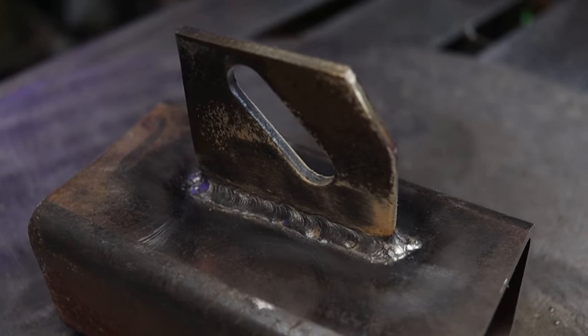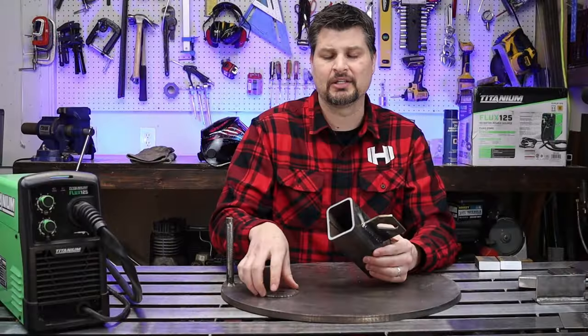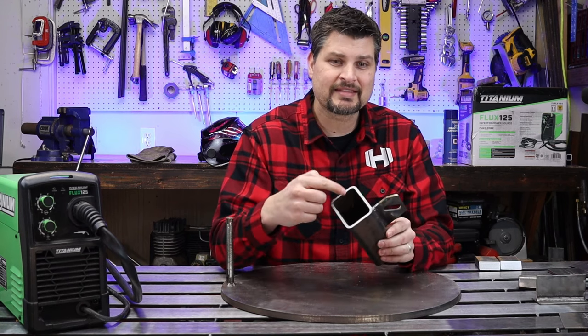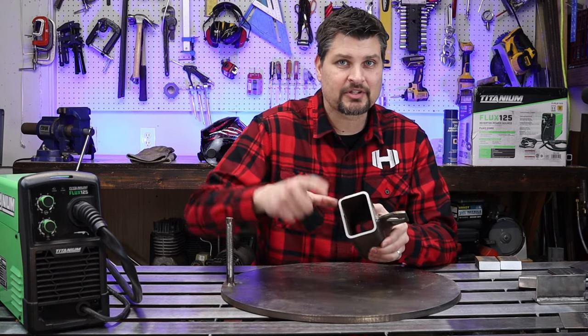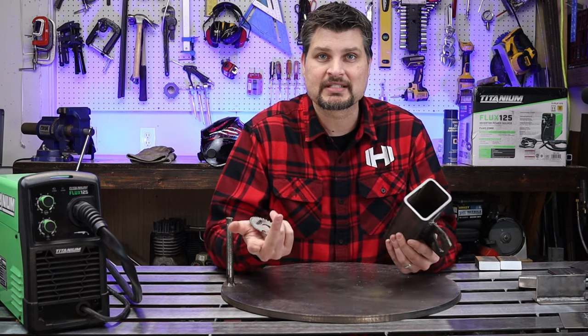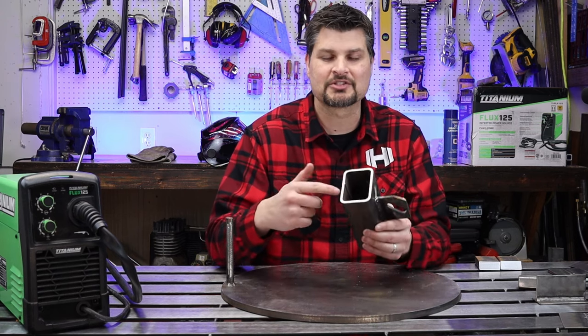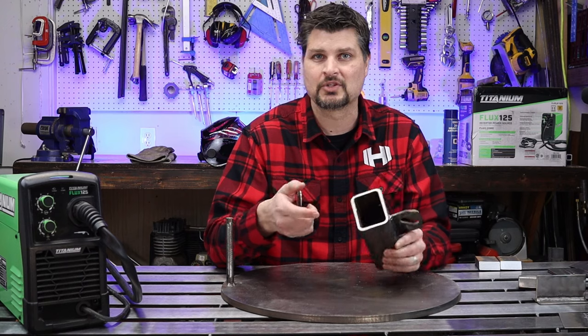I get asked a ton, can the Titanium do square tubing? Okay, here's the deal: if the thickness—it doesn't matter the overall dimensions—but if the thickness is less than 3/16ths, then yes you can. You can treat this just as a plate or square tubing as you will.